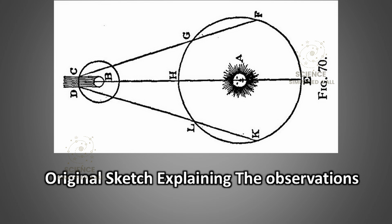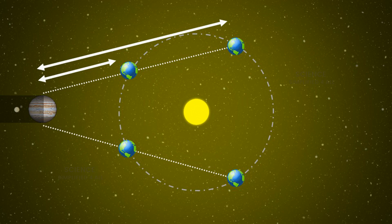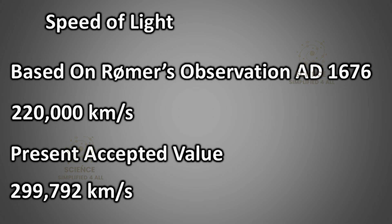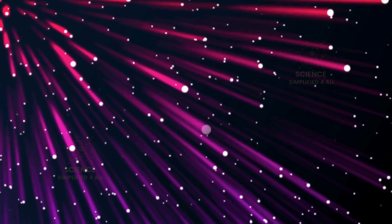Römer's findings provided solid evidence that light has a finite speed. It does not travel instantaneously. Building on Römer's observations, scientists in 1676 used the size of Earth's orbit and the measured time differences of Io's eclipses to calculate the speed of light. Their estimate was around 220,000 km per second. Although this figure is lower than today's accepted value of 300,000 km per second, it was an impressive achievement given the limitations of the time. From that point onward, one thing became certain. Light has a finite speed. But what exactly is that speed?